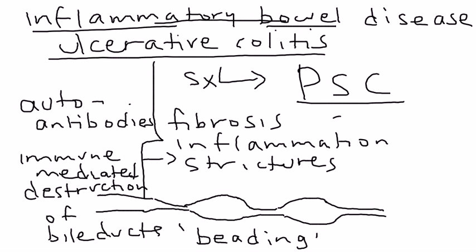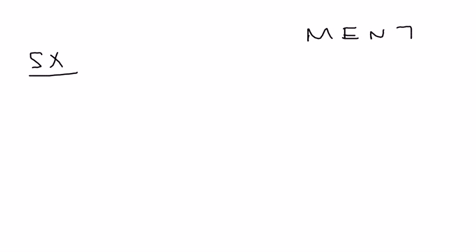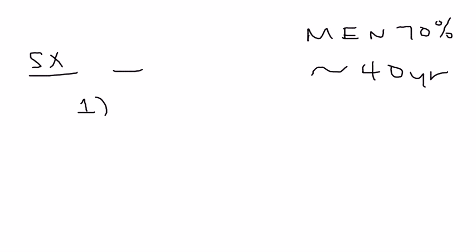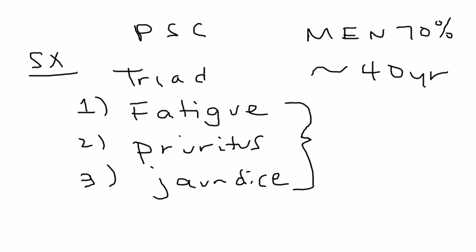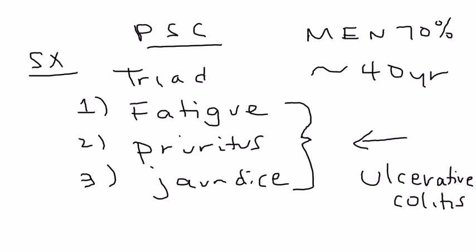PSC is more common in men — 70% of cases — and the average age of onset is around 40. The classic triad of PSC is fatigue, pruritus (itchiness), and jaundice. These three are almost always present, especially in a patient with inflammatory bowel disease or ulcerative colitis, which makes PSC nearly guaranteed. Right upper quadrant pain and fever can also present.